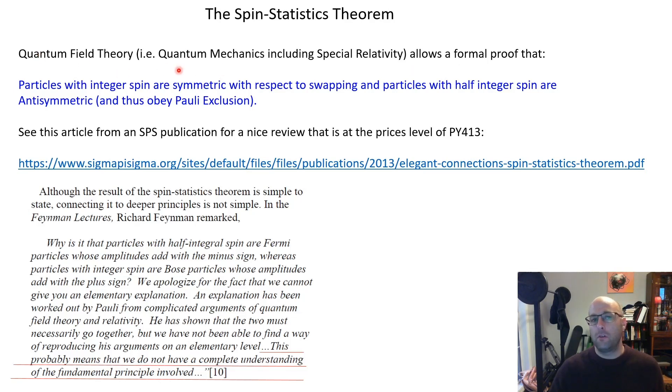Quantum field theory, where you've basically properly merged quantum mechanics and special relativity, tells you that indeed the particles with integer spin are the symmetric case with respect to exchange, and half-integer spin are anti-symmetric. Check this article from Sigma Pi Sigma here. This is from the article which actually quotes Feynman. Evidently Feynman said that we don't really understand the spin-statistics theorem at a level that can be explained in like a modern physics class or say an undergraduate thermal physics class. And he notes that this probably means we don't have a complete understanding of the fundamental principle involved, which is interesting. It means we all have some work to do.